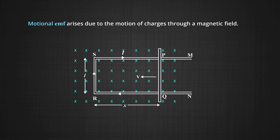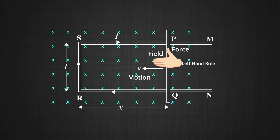It will be interesting to find the direction of the current by the direction of flow of charges. As the rod is moving, free electrons will be moving in the direction of the rod. The field is perpendicularly inward, and the force on the electron is in the direction shown by the thumb. Hence the direction of current will be opposite to it — the same as shown by the right hand rule.